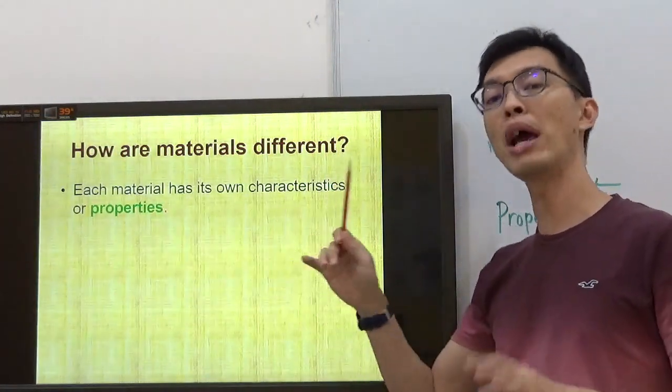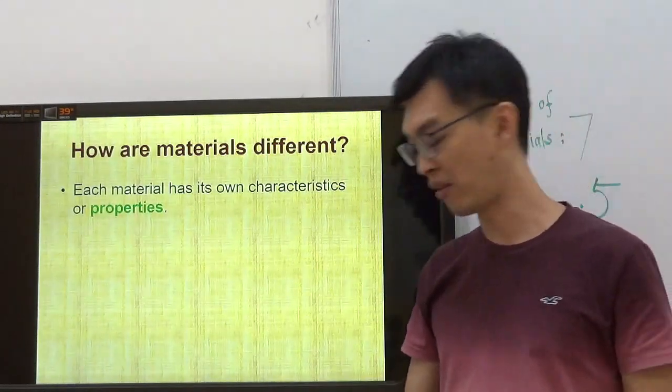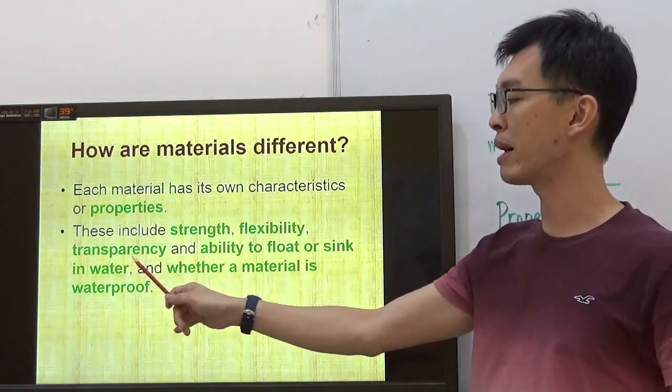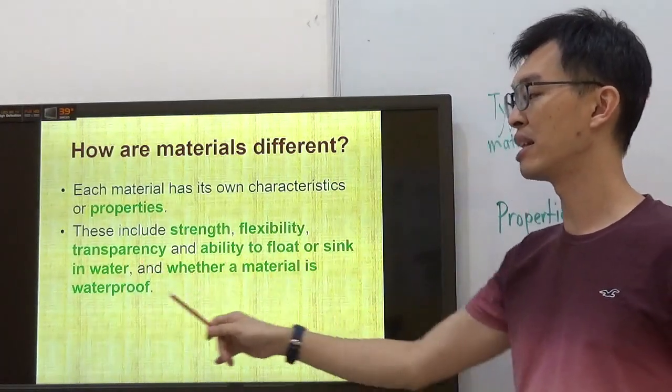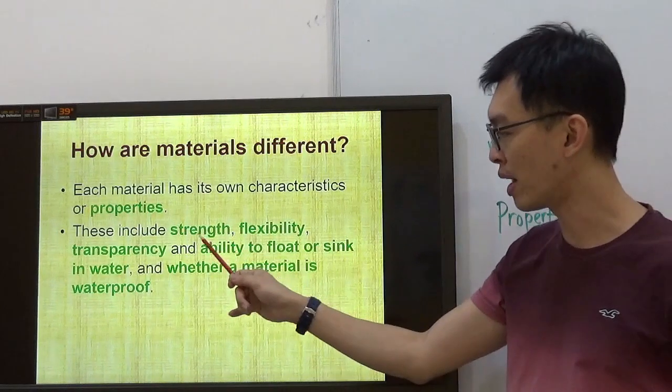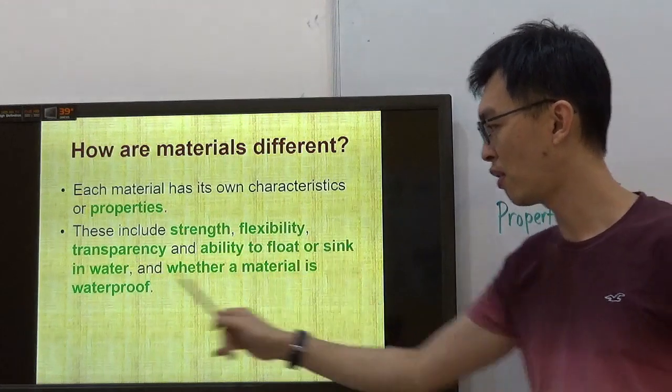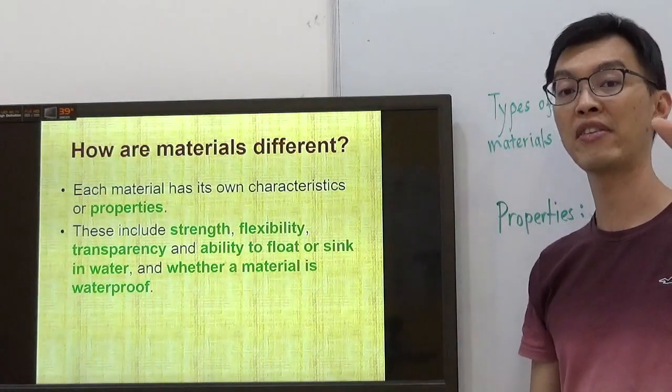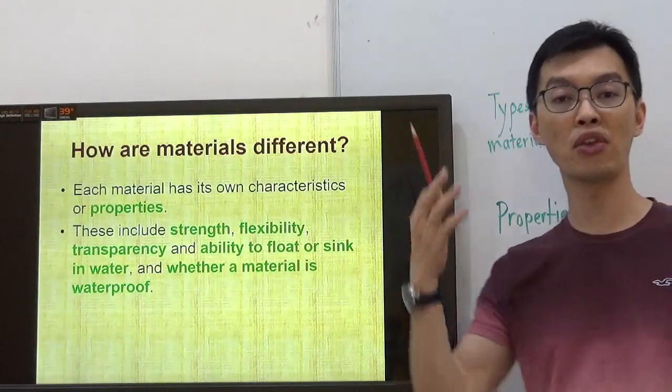Each material has its own characteristics or properties. So, the teacher actually told you before, they do have similar meaning. Now, of course, let's talk about the properties of materials. They include strength, flexibility, transparency, ability to float or sink in water, and whether a material is waterproof. The teacher actually mentioned that. Properties, there are five types. So, one, two, three, four, five. Do you see that? Five different properties. Please make an effort to copy this down or to memorize.